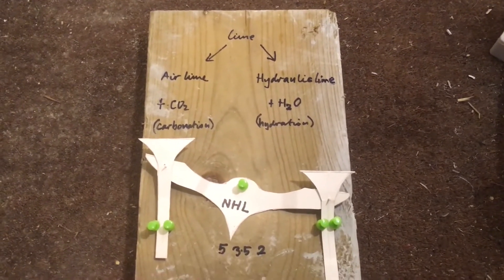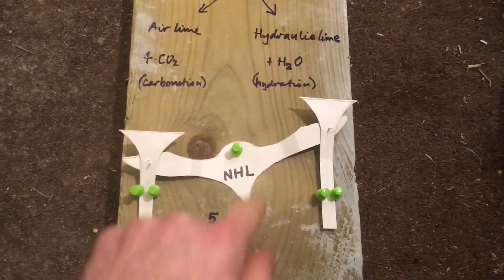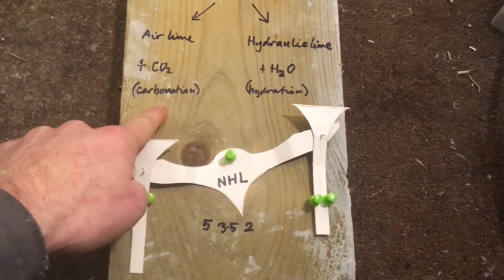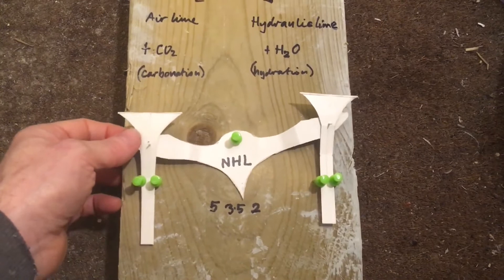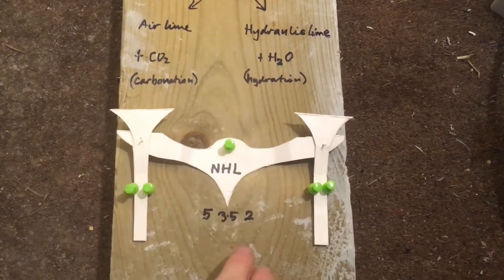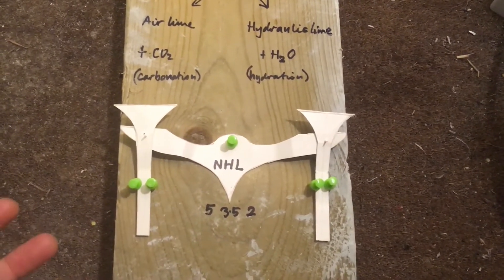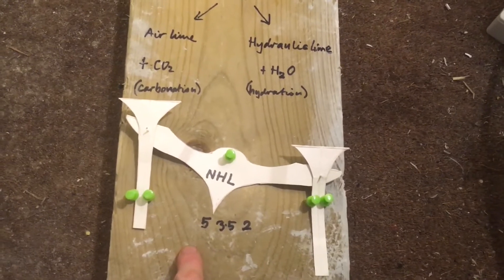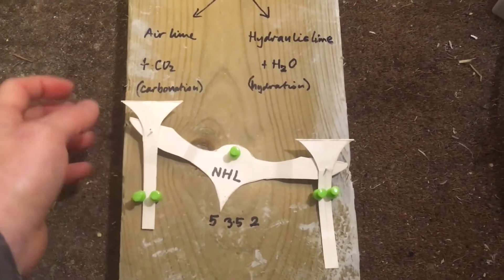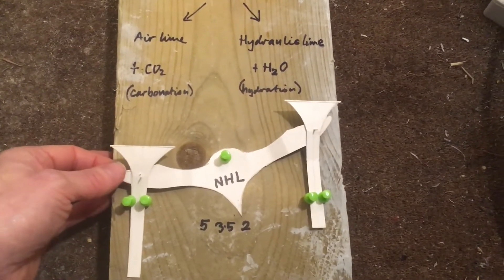I made a little scales to illustrate it. If the ratio tips in favor of air lime you get NHL 2. A little less air lime and a little more hydraulic lime gives NHL 3.5, and if it tips further to favor hydraulic lime you get NHL 5, the most strongly hydraulic mix. NHL 2, 3.5, and 5 roughly correspond to what used to be called feebly, moderately, and eminently hydraulic lime. NHL 2 sets very slowly through carbonation, is more vapor permeable, and less waterproof. NHL 3.5 sets a little faster, is a little less vapor permeable and a little more waterproof. NHL 5 sets most quickly, is least vapor permeable, and most waterproof.